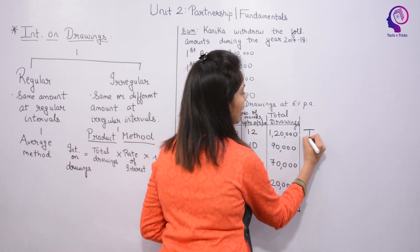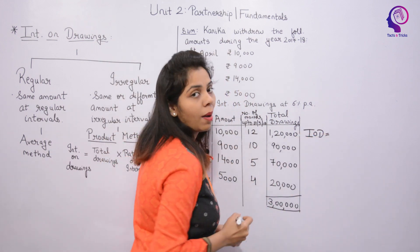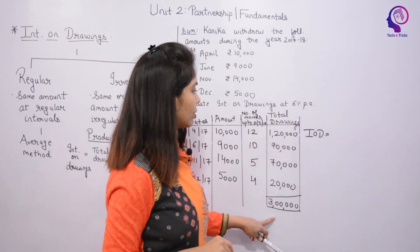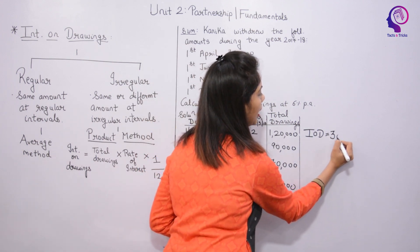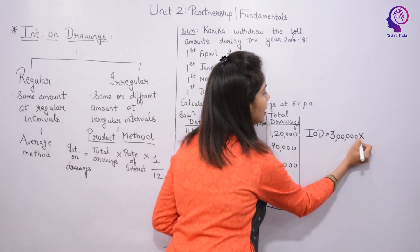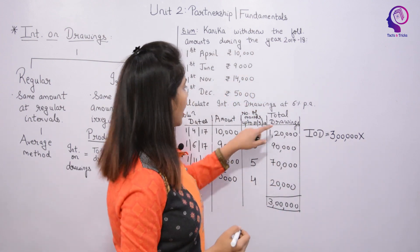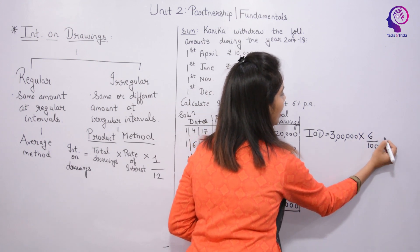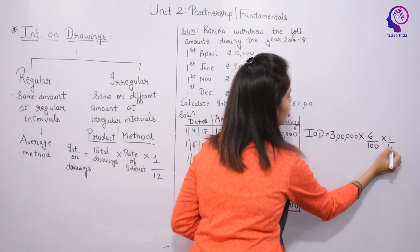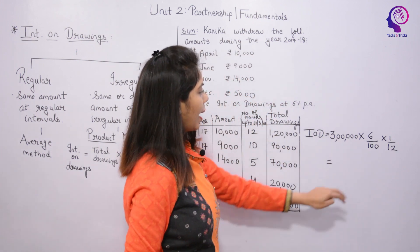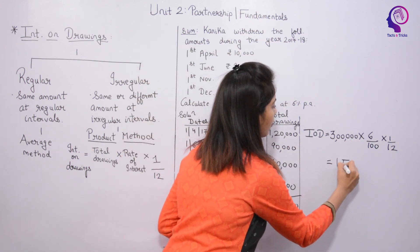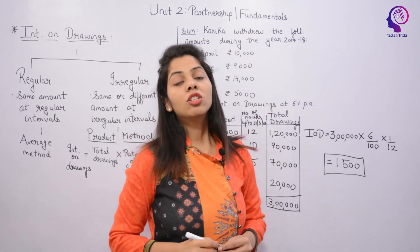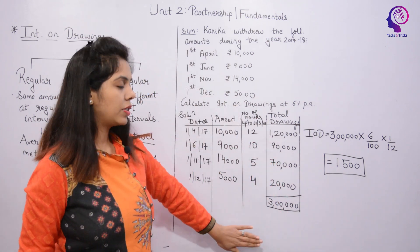Now applying the Interest on Drawings formula: Interest = Total Drawings × Rate × (1/12) = 3,00,000 × 6% × (1/12) = 1,500. Hence, Kanika's Interest on Drawings will be 1,500.